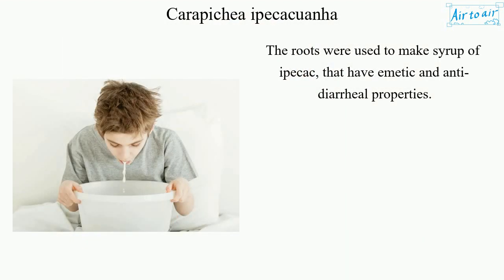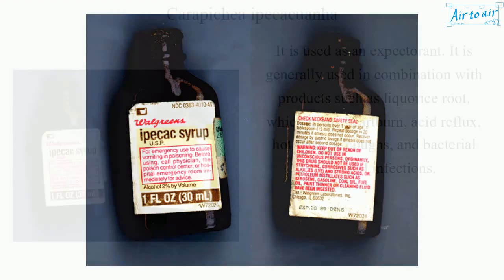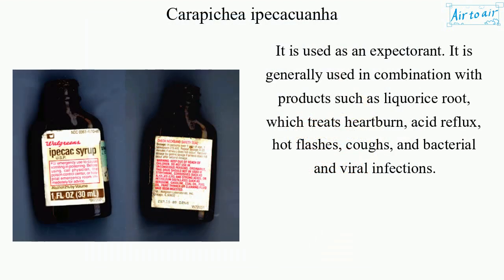The roots were used to make syrup of ipecac, which has emetic and anti-diarrheal properties. It is also used as an expectorant, generally in combination with products such as licorice root.